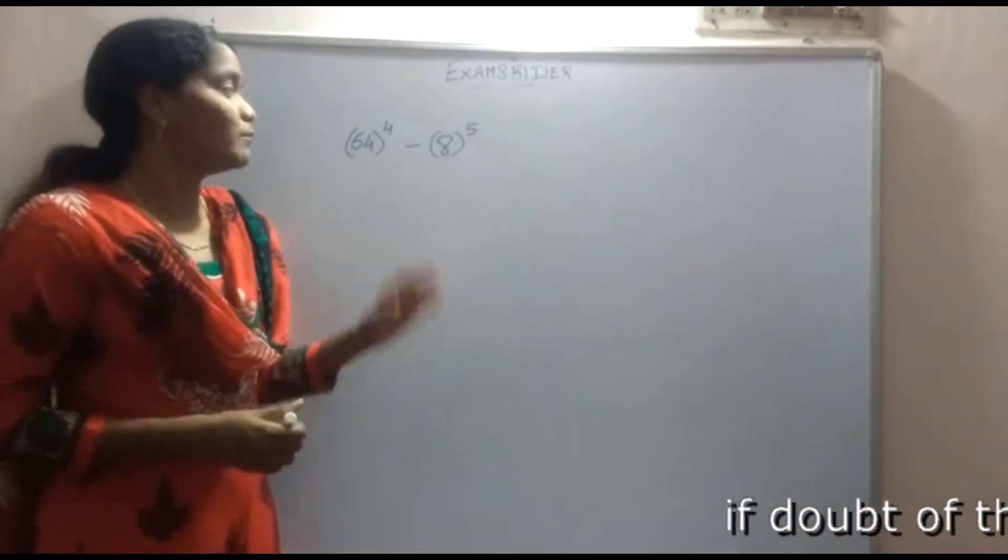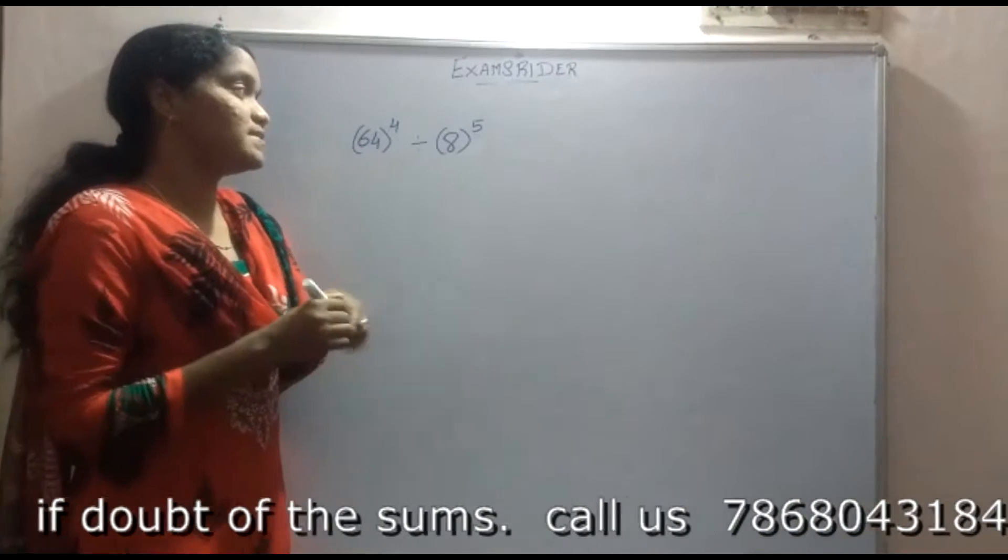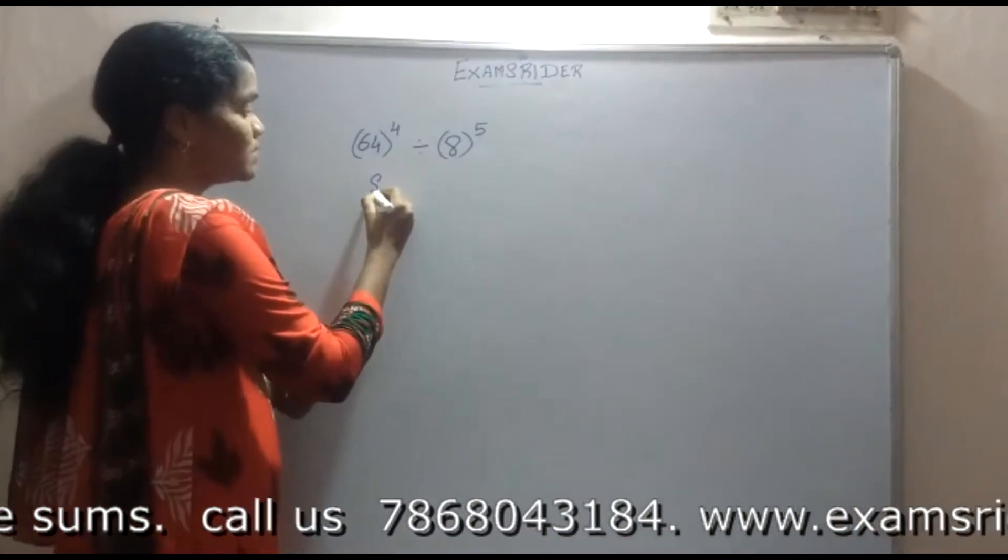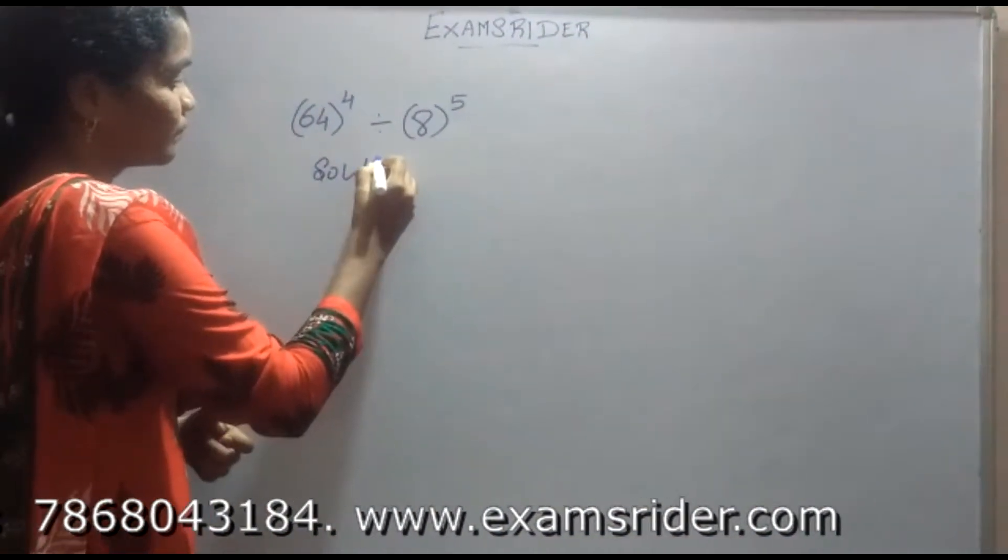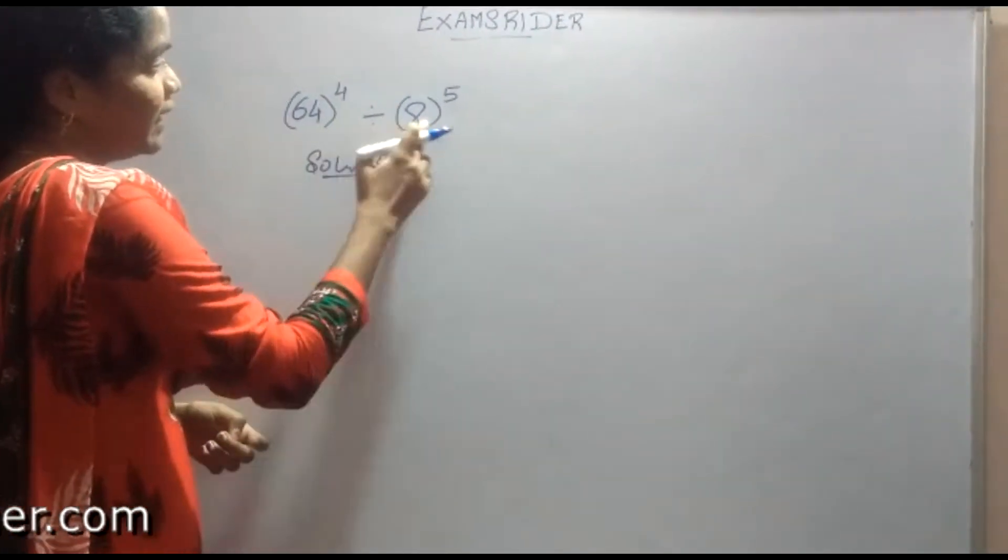I have a mixed study. Now I am going to solve this sum. It is one of the important sums in the simplification section. The problem is 64 power 4 divided by 8 power 5.